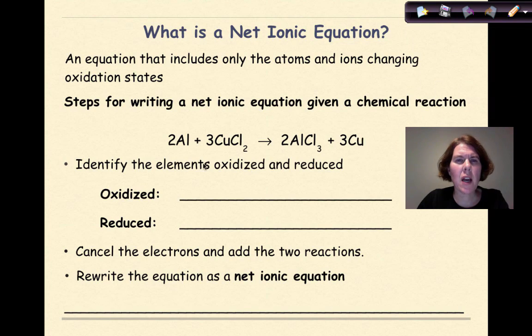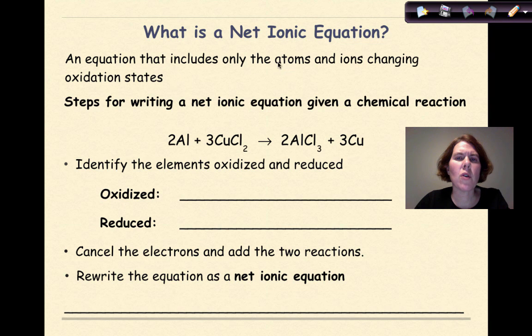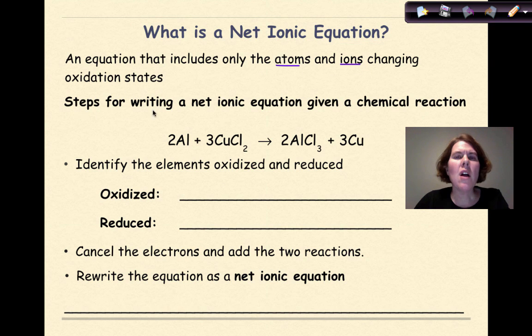So what is a net ionic equation? A net ionic equation is an equation that includes only the atoms and the ions that are changing oxidation states. We're going to look at some steps of how to write this type of reaction.